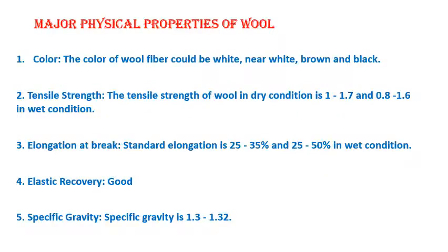Now we will see a series of major physical properties of wool. Number one is color — the color of wool fiber could be white, near white, brown, and black. As discussed earlier in the glossary, all colors except white are generally termed as 'black wool' in the industry. Number two is tensile strength — the ability to withstand force against the fibers.